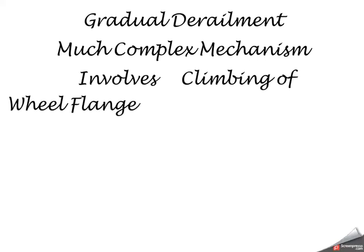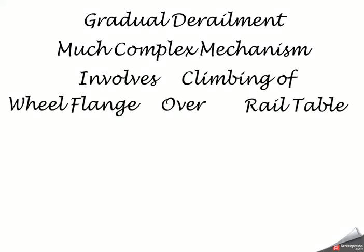The other one is gradual derailment which involves much complex mechanism. It involves climbing of wheel flange over rail table.